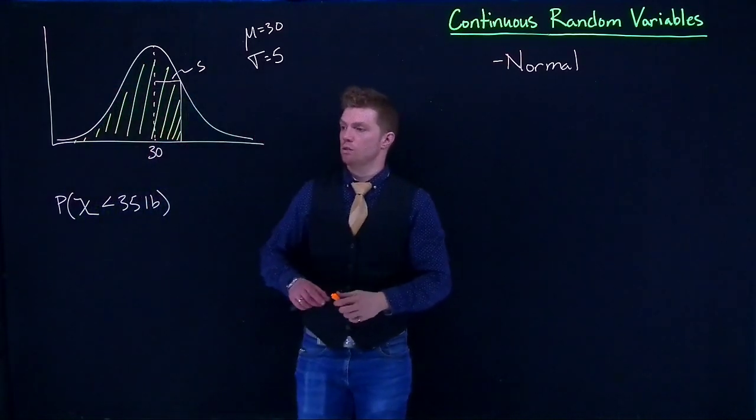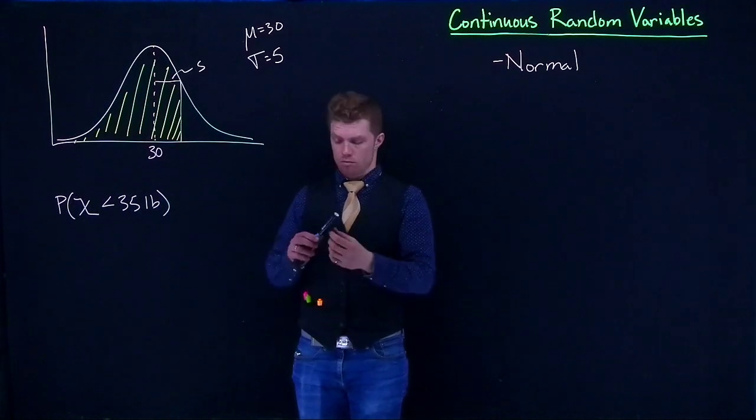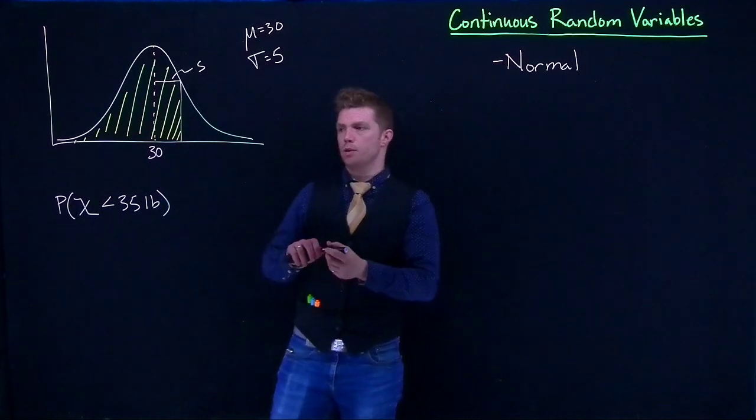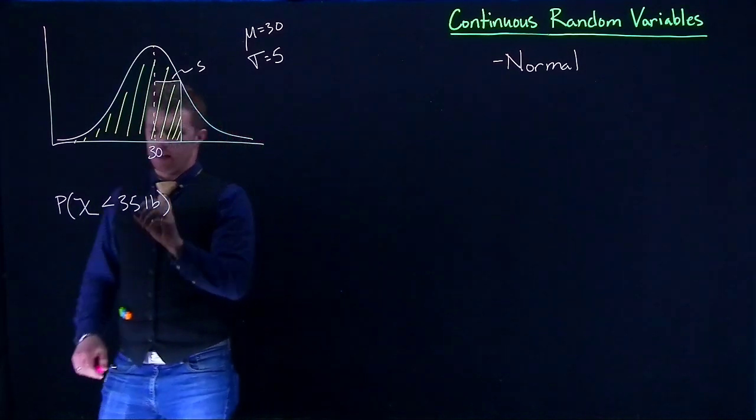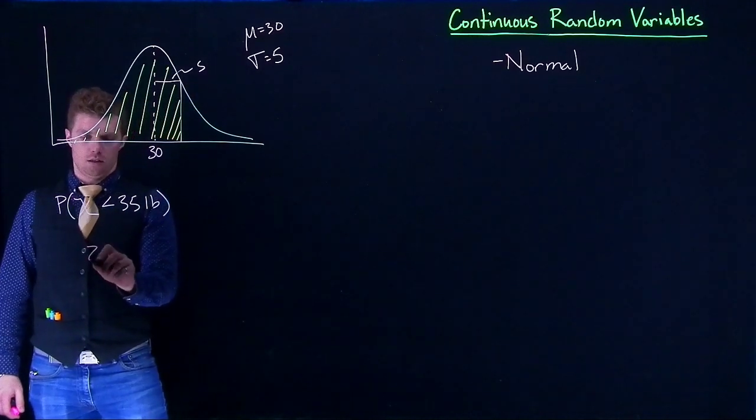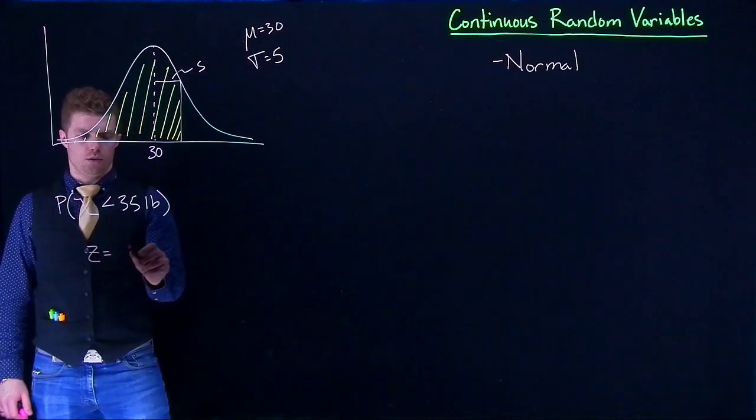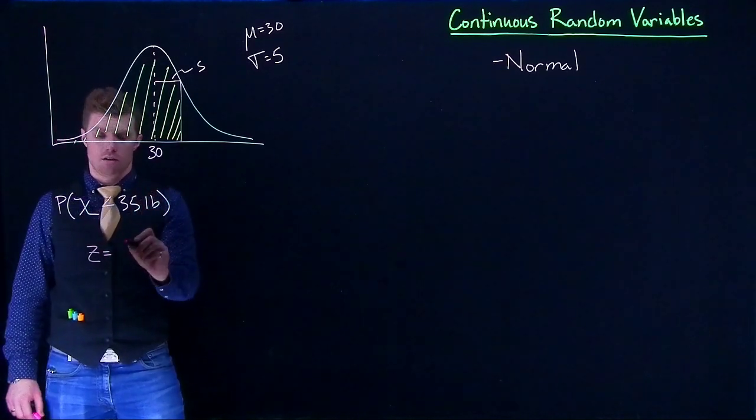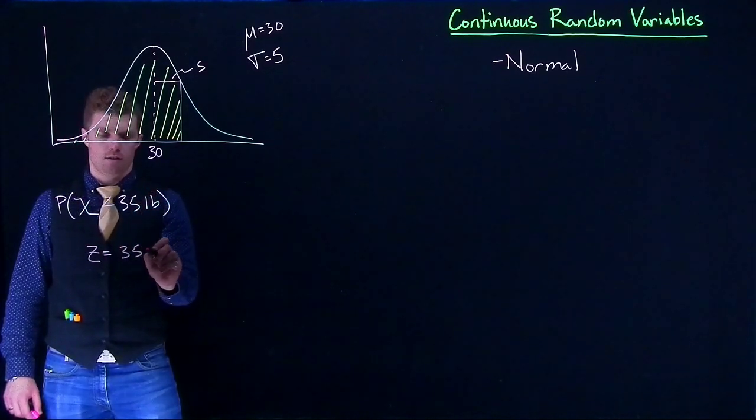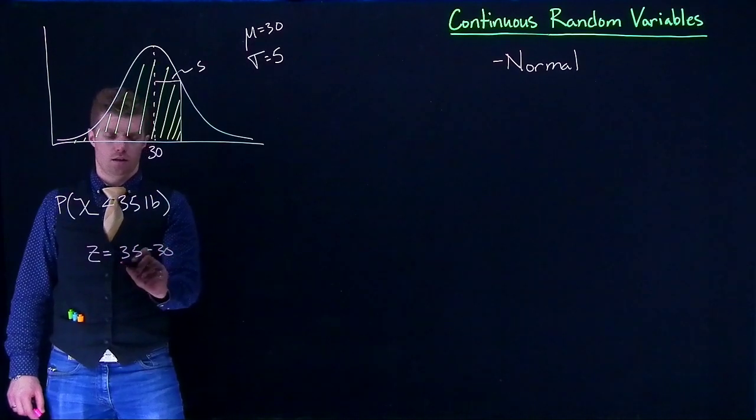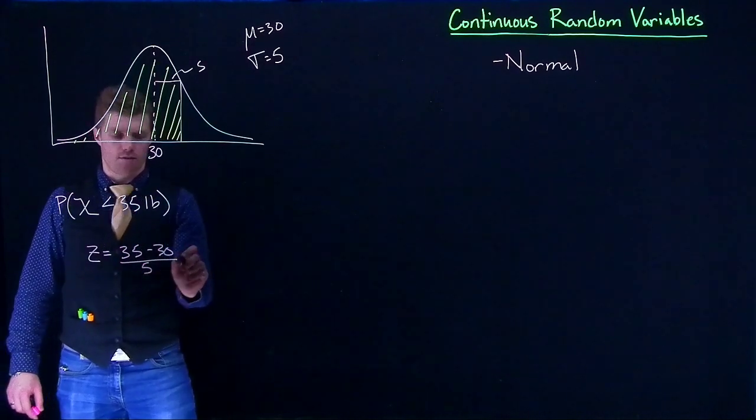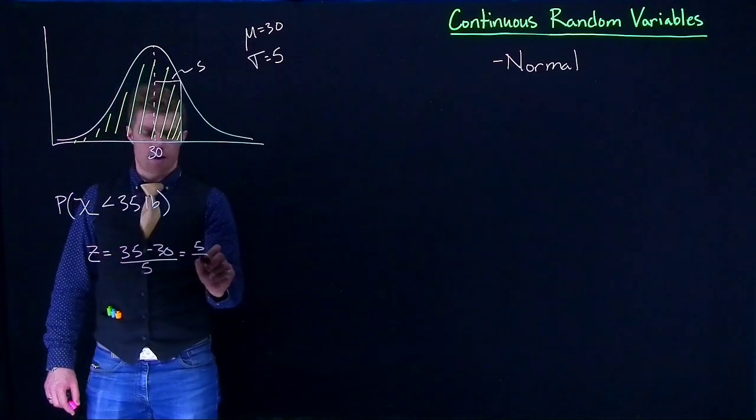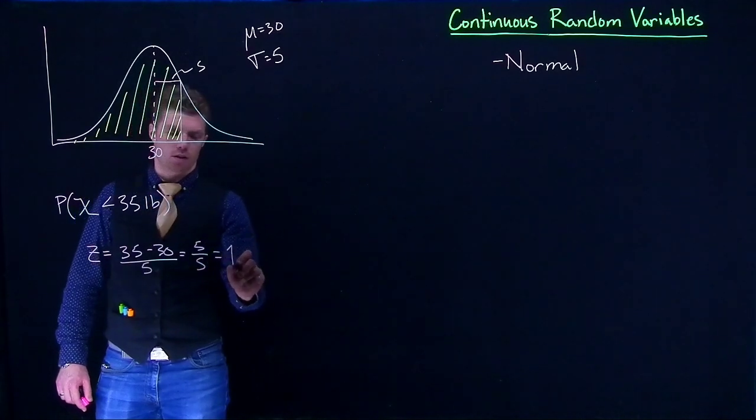The first thing that I want to know is the z-score. Our z-score for our observation is going to be z equals x, which is our observation, our target, which is going to be 35 minus 30 divided by 5, which gives us 5 divided by 5, which gives us 1.